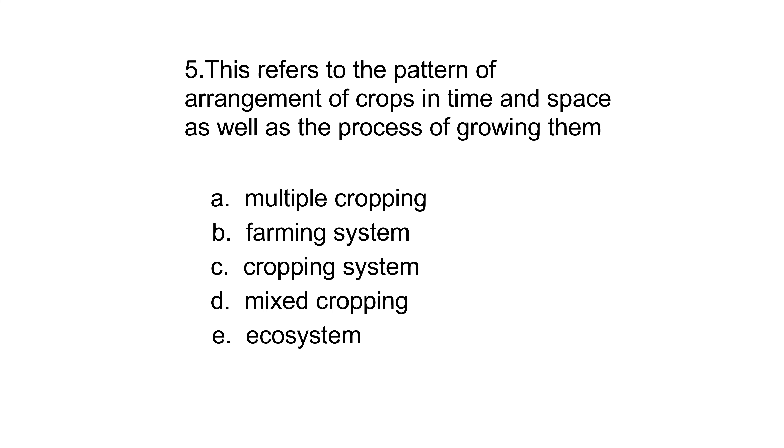Number five: This refers to the pattern of arrangement of crops in time and space as well as the process of growing them. Options: multiple cropping, farming system, cropping system, mixed cropping, or ecosystem. The answer is cropping system.